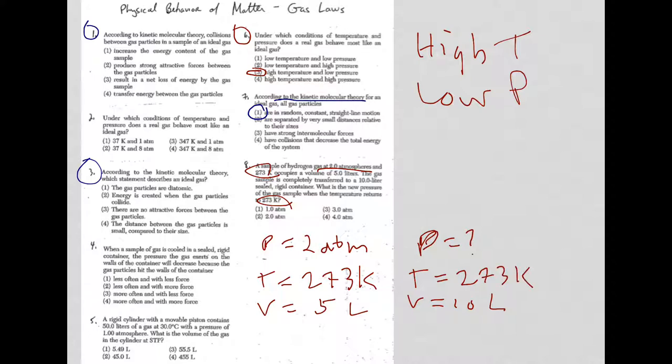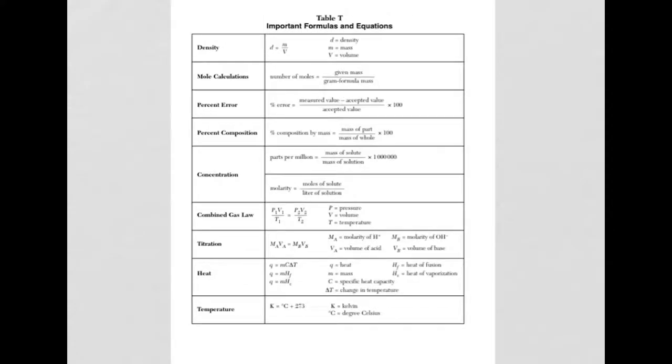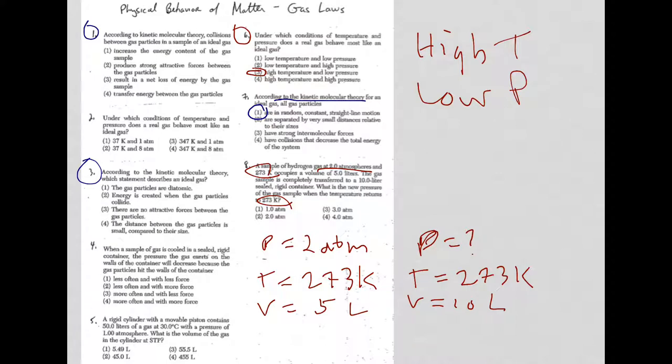Well, with that information, if I go to reference table T, the only thing it could be is the combined gas law equation. None of the others make sense. Temperature, by the way, always has to be in Kelvin. Pressure and volume, as long as you have consistent units on either side, you're all right as far as the calculation goes. And in this question, we were given Kelvin. But not only that, it stays constant.